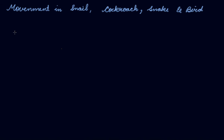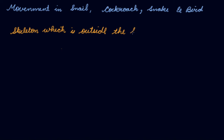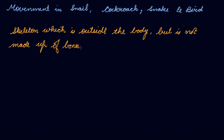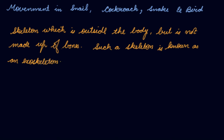Let us first understand the skeleton which is outside the body. We humans have the skeleton inside the body. There are some insects and crabs which have the skeleton outside the body, but it is not made up of bone. Such a skeleton is known as an exoskeleton. Crabs, cockroaches, and snails all have this exoskeleton.